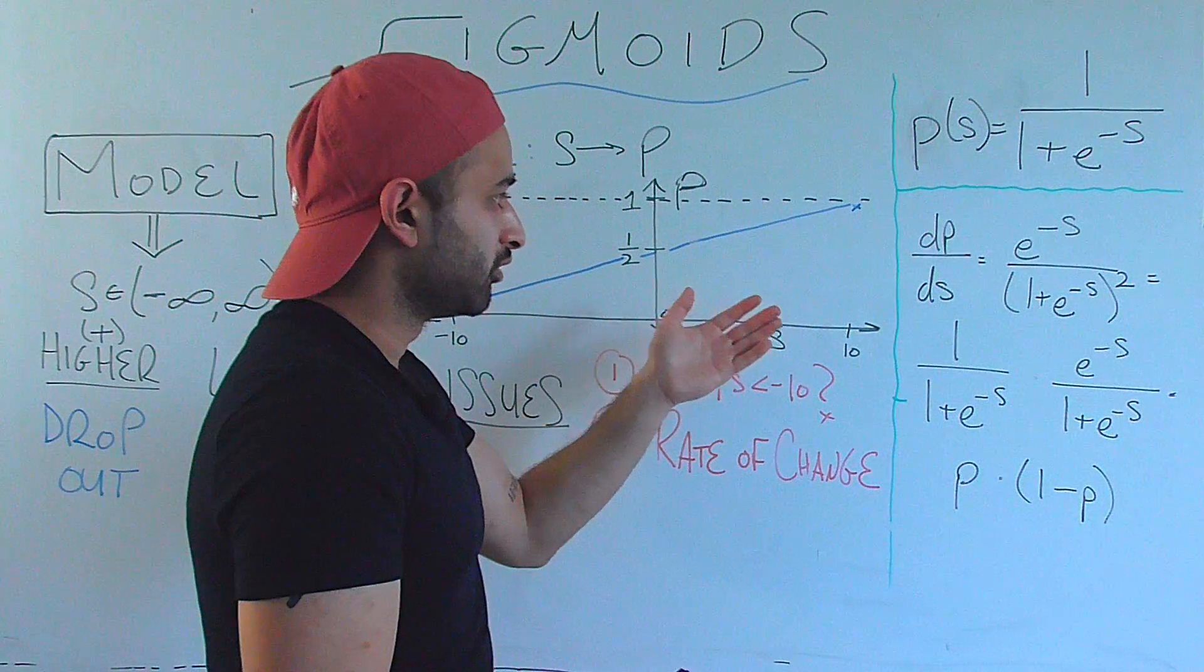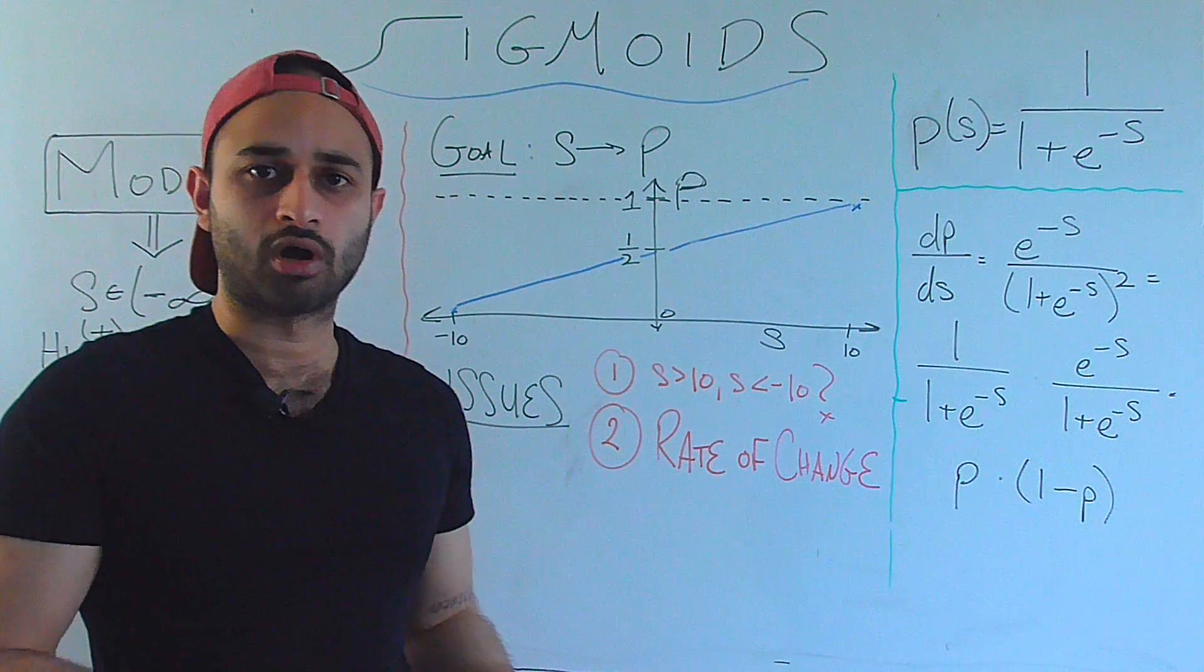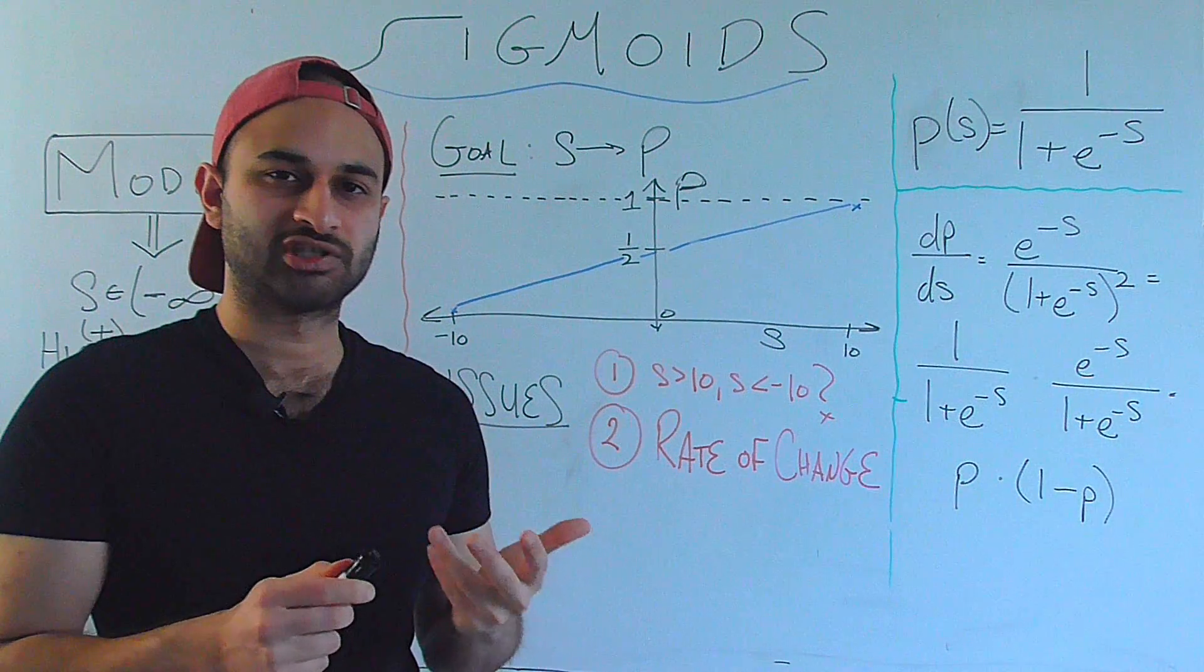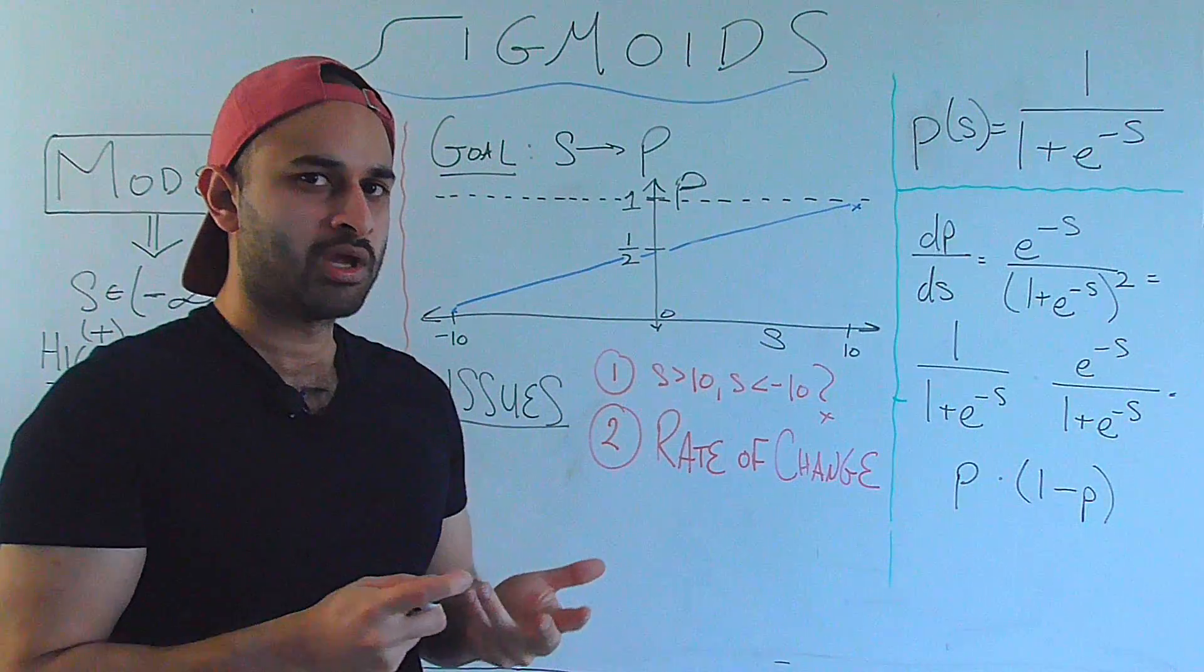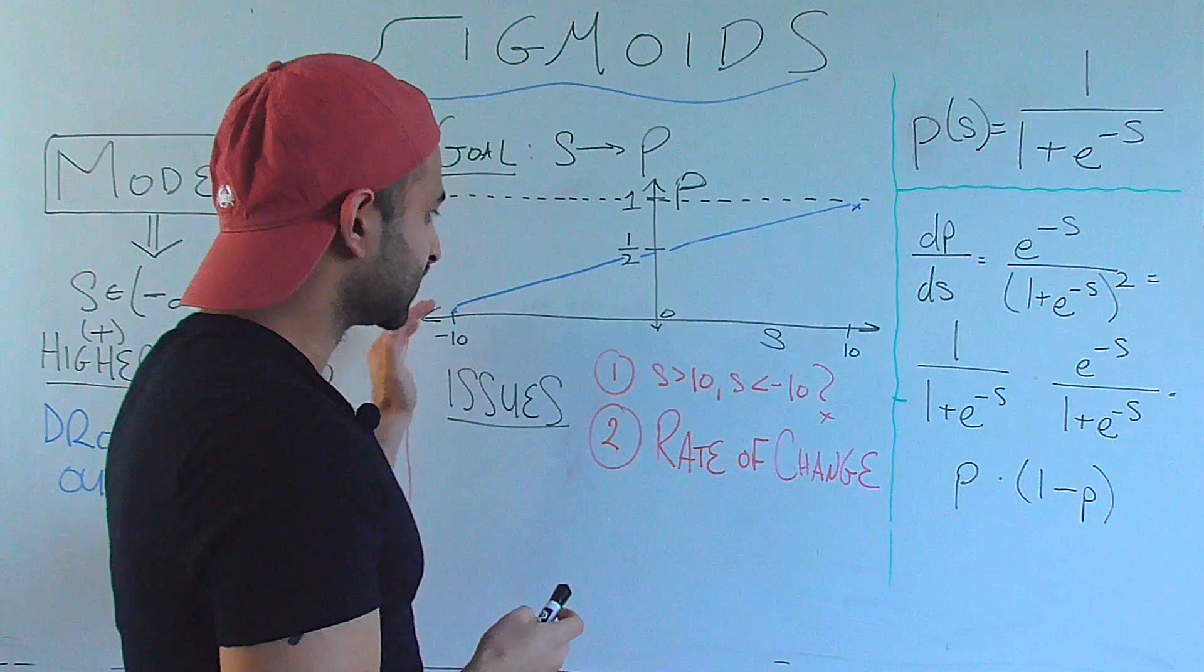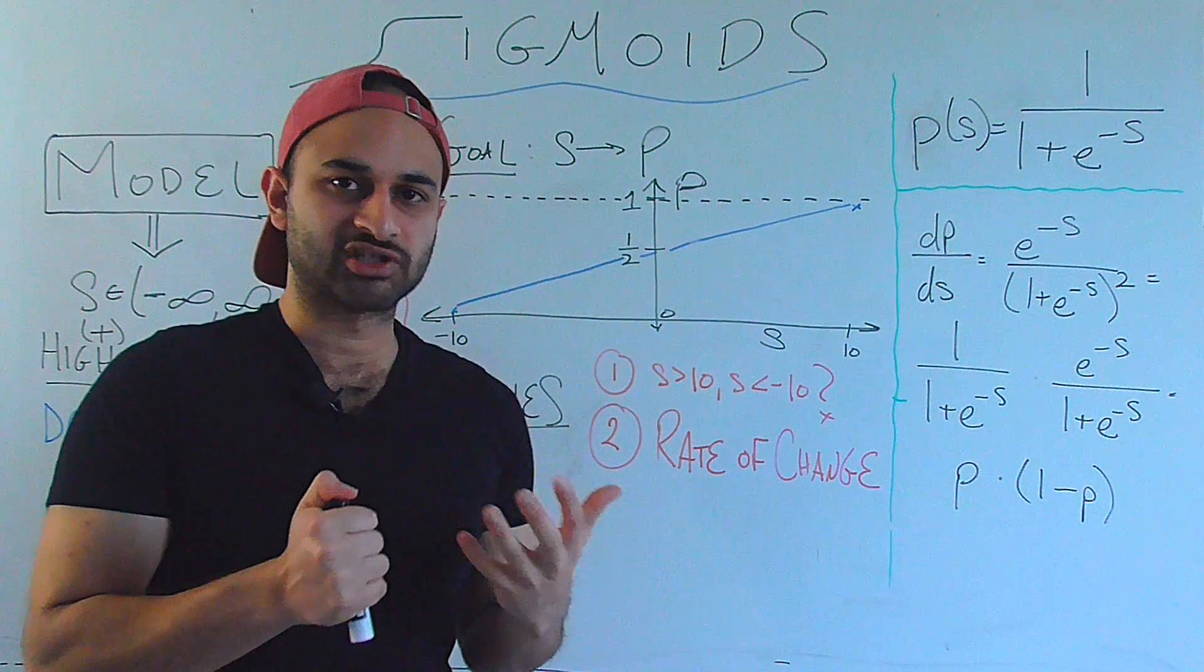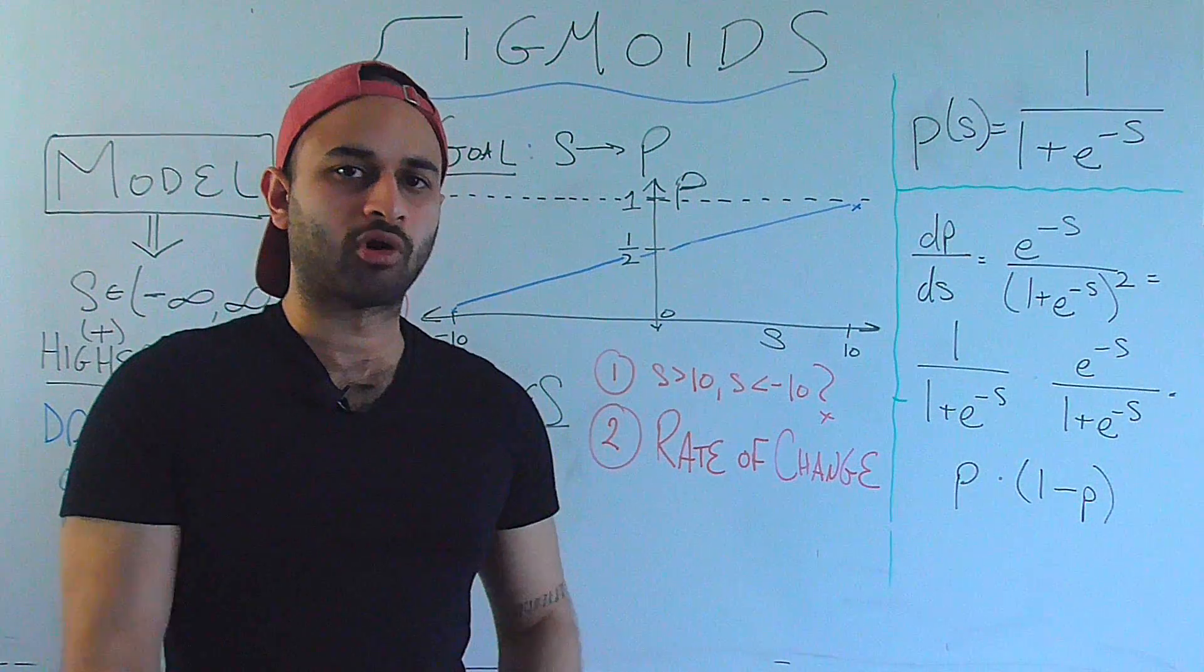Our linear model would basically just map that out of bounds, something that's less than 0 or greater than 1, so that's no longer interpretable as a probability. So it seems kind of weird to do that. And perhaps the bigger issue, which is issue number 2, is that the rate of change of this linear function doesn't really capture the heart of this probabilistic setup.